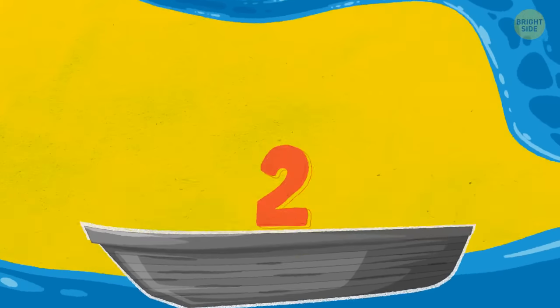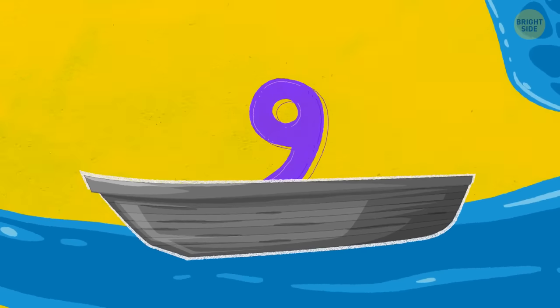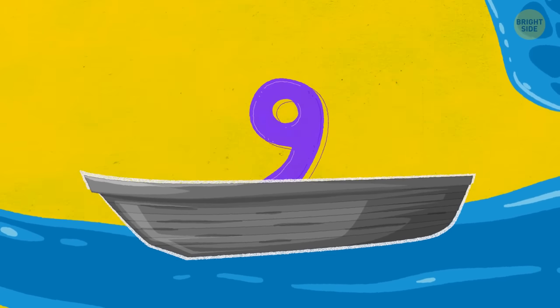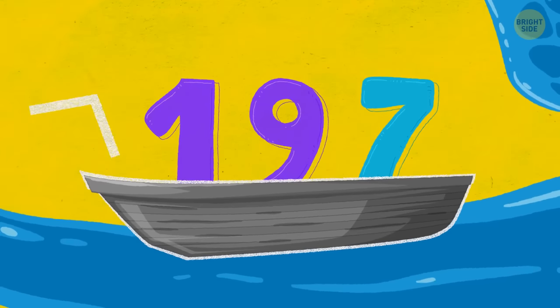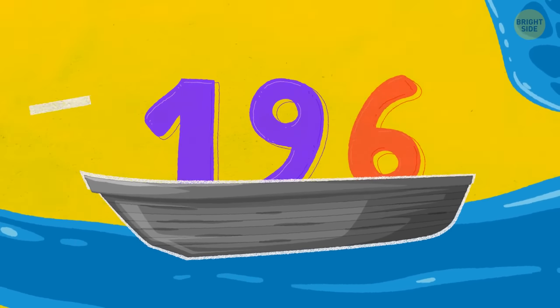At least seven trips. Two plus five plus nine equals 16. Then nine goes back. Three plus four plus nine equals 16. After that, nine returns. One plus seven plus eight equals 16. One goes back. And finally, one plus six plus nine equals 16.